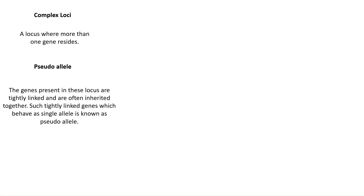When more than one genes are present at the same locus, those genes are very closely associated because they are present at one place only. For example, if one chair is in a room and two people are sharing that same chair, both sitting and adjusting with each other — they are very closely packed, very tightly linked together. Similarly, when more than one genes are present at one place, they are very closely associated and tightly linked, and due to this they always transmit to the next generation together.